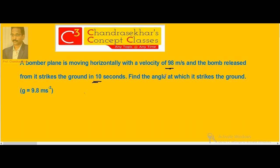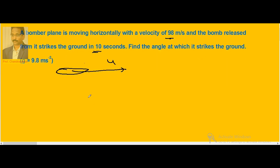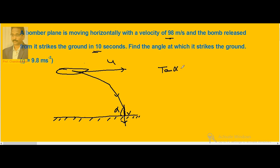Imagine a bomber plane moving horizontally with velocity u. A bomb is released from it, and the released bomb moves along a parabolic path and strikes the ground. The angle alpha is what we need to find. We know that tan alpha equals Vy divided by Vx, where Vy is the vertical component and Vx is the horizontal component of velocity.